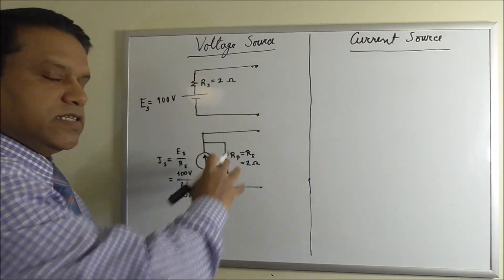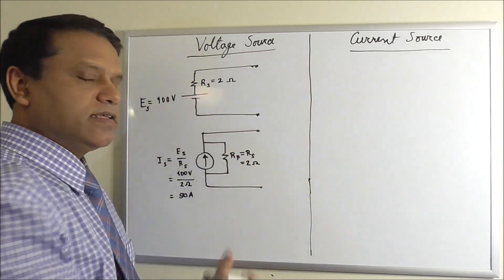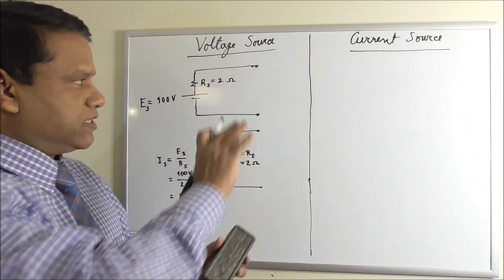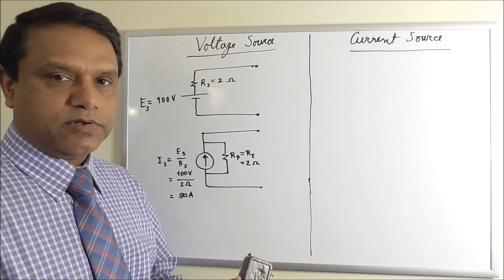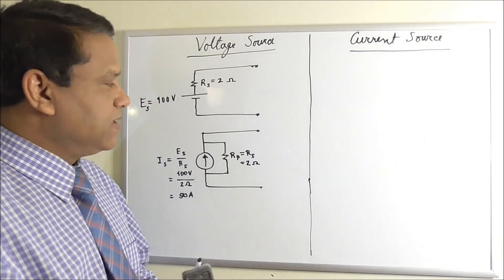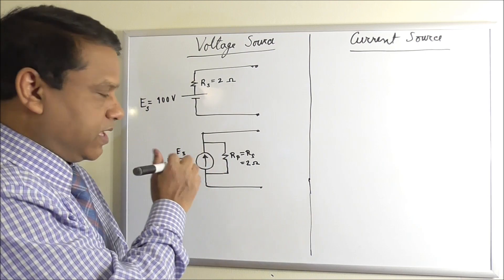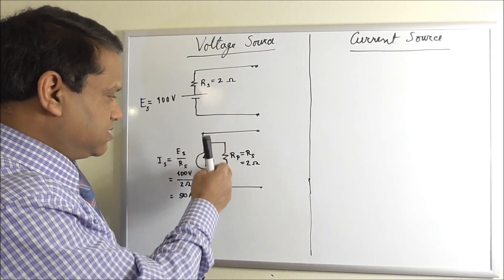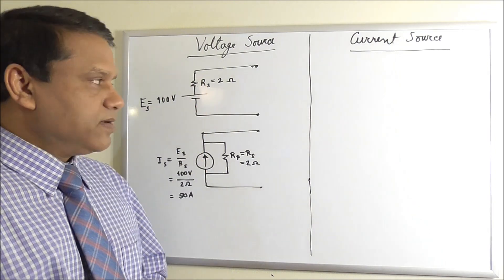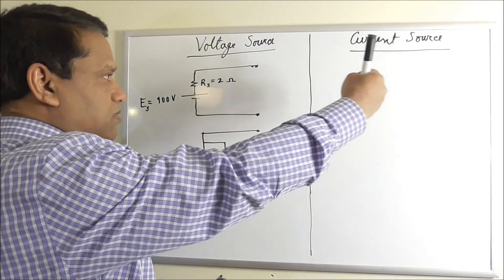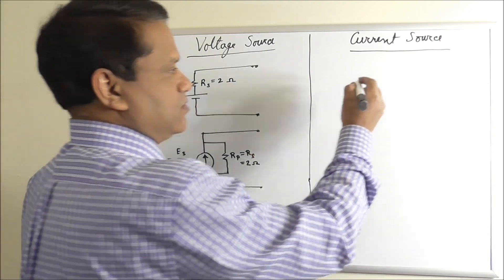These sources are treated as equivalent sources from the outside. If you connect anything externally, the currents and voltages at the terminals will remain the same — there will be no change. However, inside the source they are not equivalent. For example, the current through the parallel resistor is not the same internally, but from the terminals they behave like the same source.